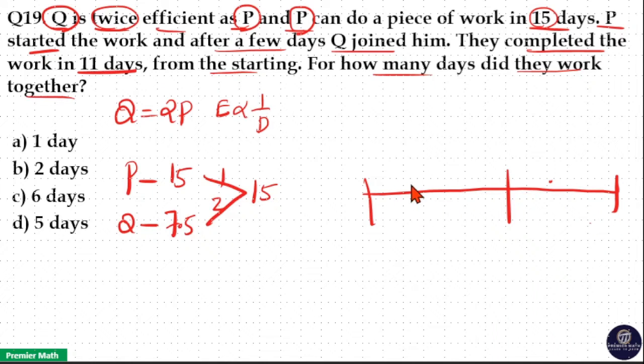Now first P started the work. Then Q joined. That is after that P and Q together worked. And this total work completed in 11 days.